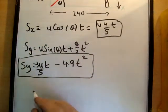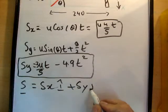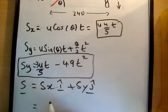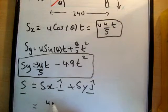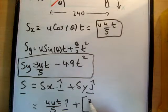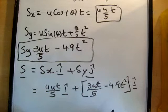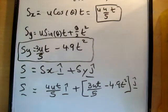And they are two vectors s sub x and s sub y. Where we know the position vector s is equal to s sub x i hat plus s sub y j hat is equal to 4u t over 5 i hat plus 3u t over 5 minus 4.9 t squared j hat. You couldn't see that there. I'm sorry about that. That's the position vector s.